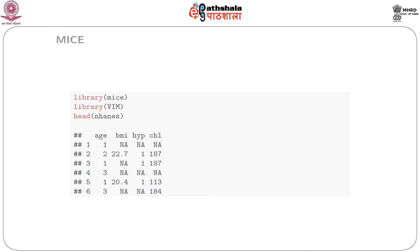The data contains four variables: age (the age group), BMI (body mass index), HYP (hypertension status), and CHL (cholesterol level). The data is stored as a data frame and the missing values are represented as NA. The objective is to run a regression with cholesterol level as the response variable and age and HYP (hypertension status) as explanatory variables. To view the data, we write head(enhance) and the output shows the values as well as the missing values coded as NA.